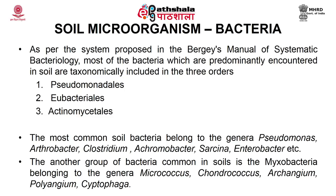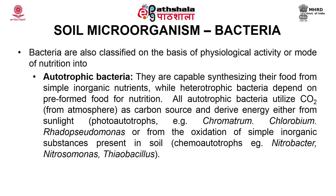On the basis of physiological activity, bacteria are classified into autotrophic and heterotrophic. Autotrophic bacteria synthesize food from simple inorganic nutrients, while heterotrophic bacteria depend upon pre-formed food for nutrition. All autotrophic bacteria utilize CO₂ as a carbon source and derive energy either from sunlight (phototrophs) or from oxidation of inorganic substances (chemotrophs). Examples of phototrophs are Chromatium, Chlorobium, and red Pseudomonas; examples of chemotrophs include Nitrobacter, Nitrosomonas, and Thiobacillus.